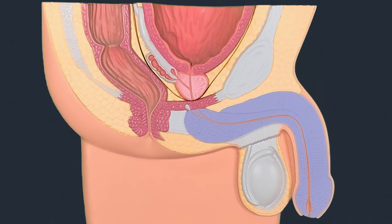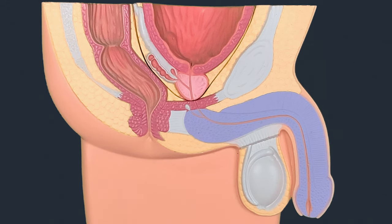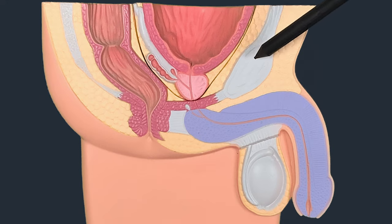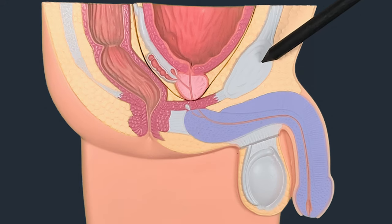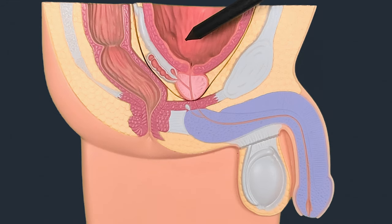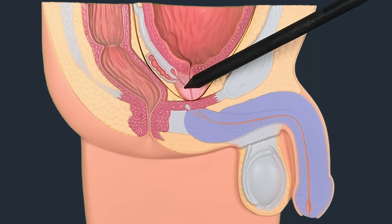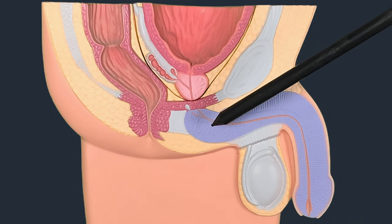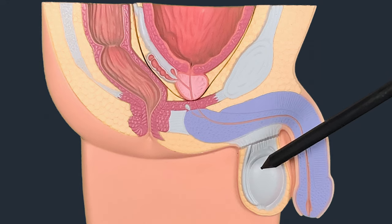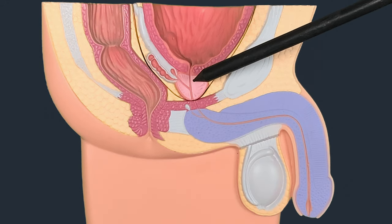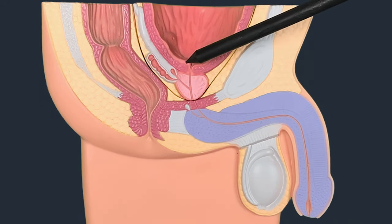Now let's have an orientation of this model. This is a sagittal view of a male pelvis. From anterior to posterior, this is the pubic symphysis and that's the rectum. In the middle, this is the urinary bladder, and just under the urinary bladder we can see the prostate gland. This is the penis and this is the testes.